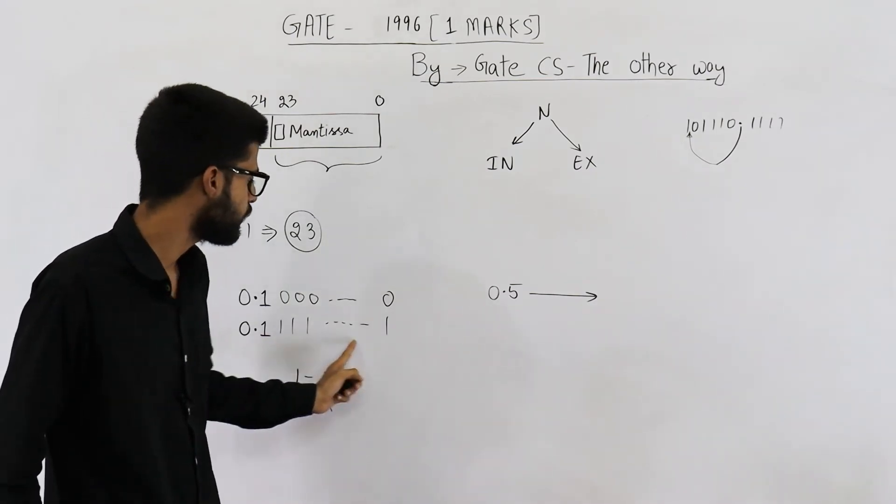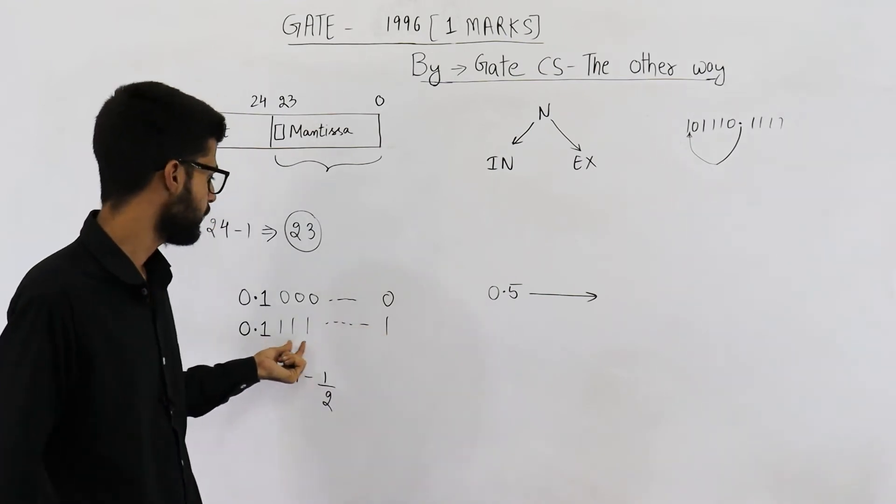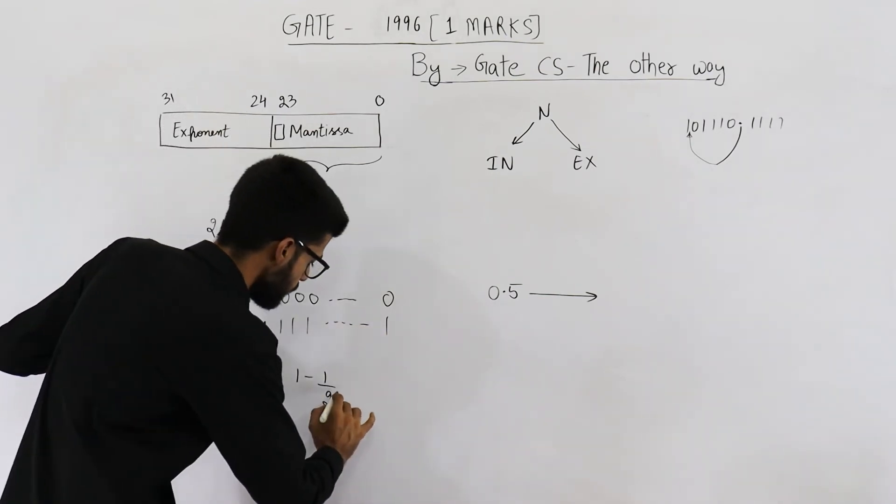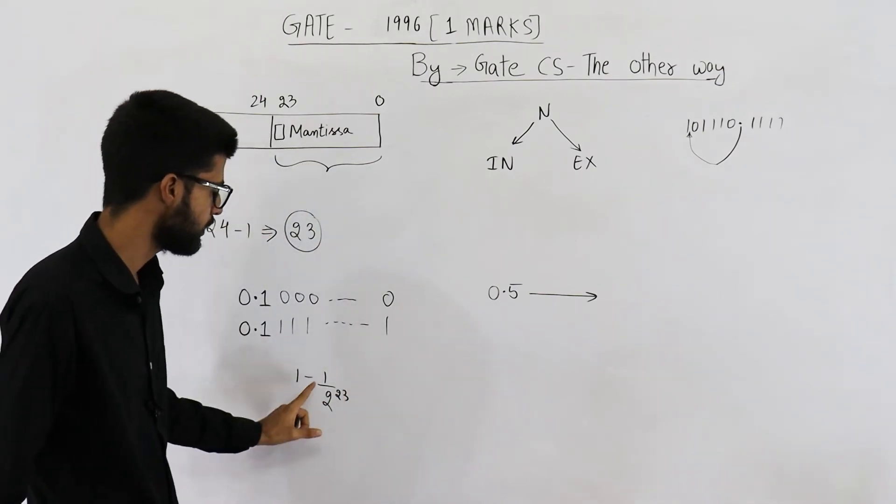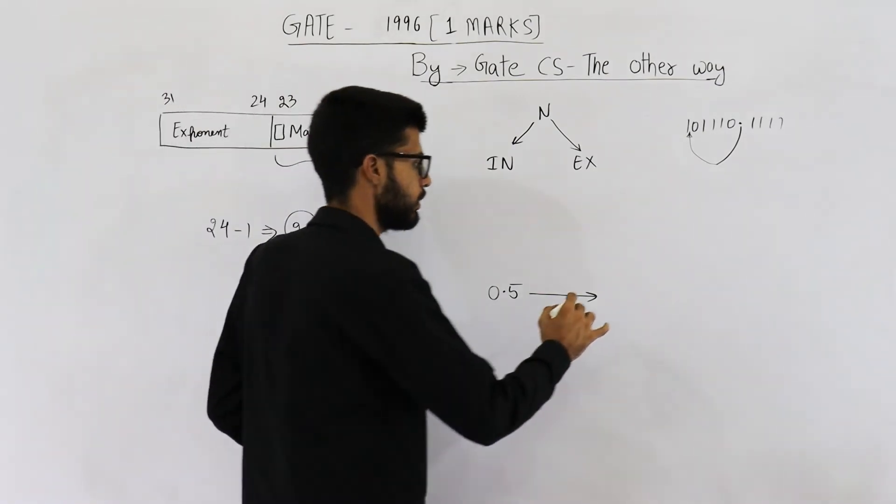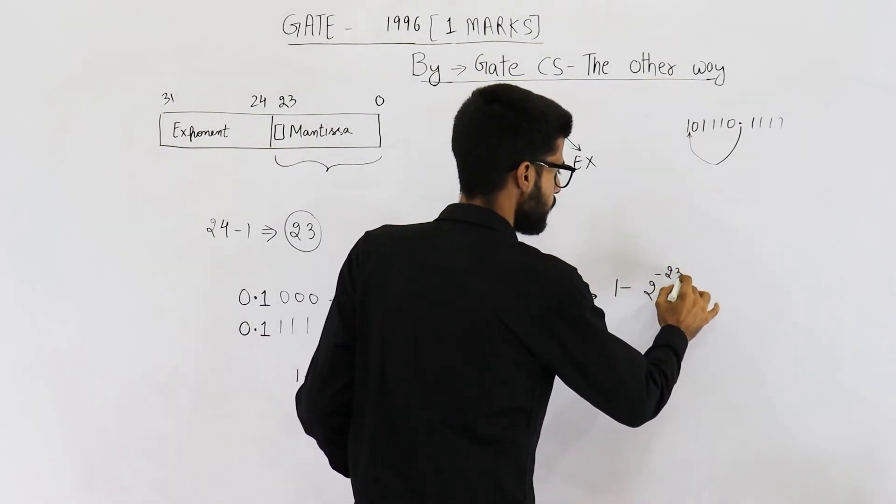n is the number of 1s. Here, you actually have 23 ones. First one plus these 22. So, it is 23. That means, biggest number is 1 minus 2 raised to the power minus 23. 1 minus 2 raised to the power minus 23.